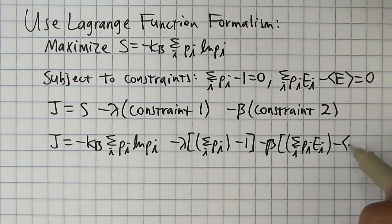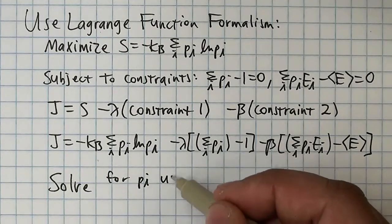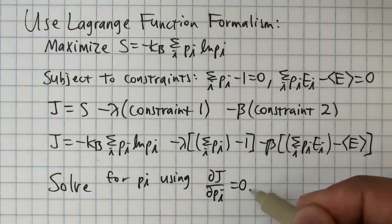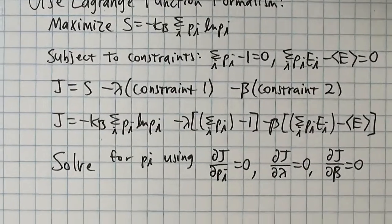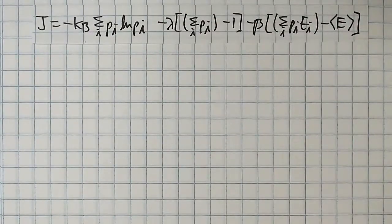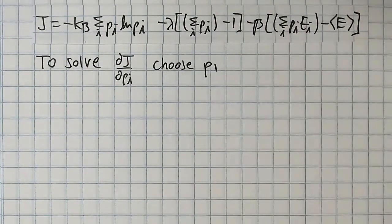We're looking for the final form of pi that satisfies these equations, setting derivatives of the Lagrange function to zero. Let's start with partial j partial pi. This is actually a whole list of derivatives, one for every pi.